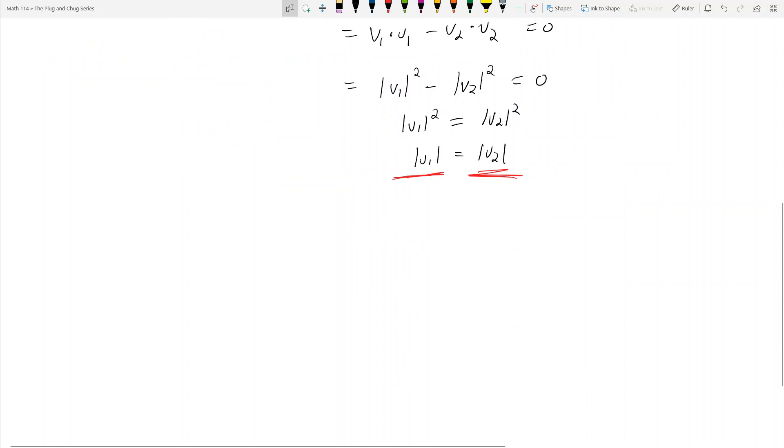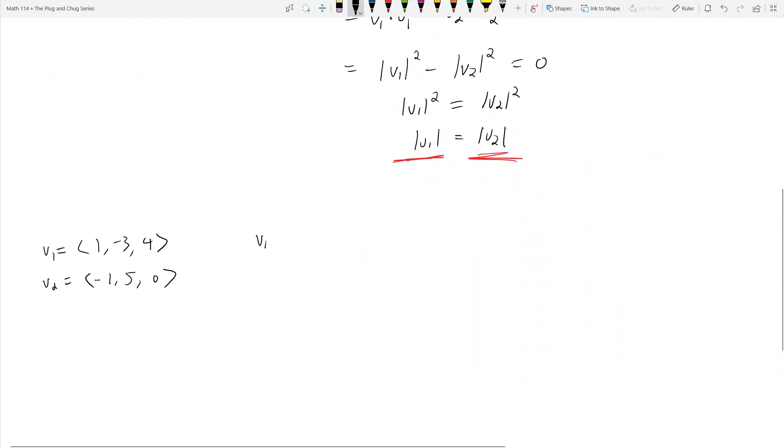If we really want to see this be true, we can come up with an example. Let's say V1 is equal to 1, negative 3, 4, and V2 is equal to negative 1, 5, 0. Their magnitudes have to be the same.